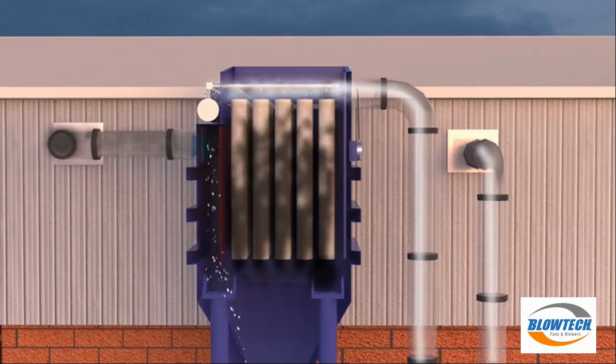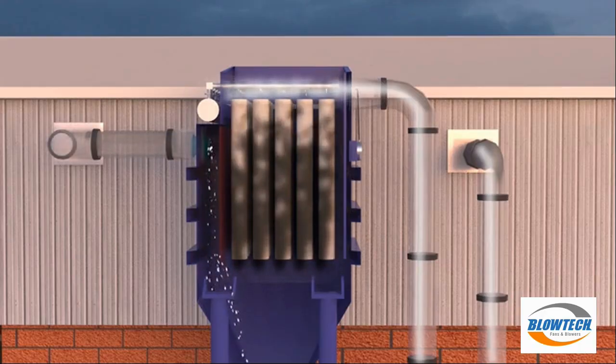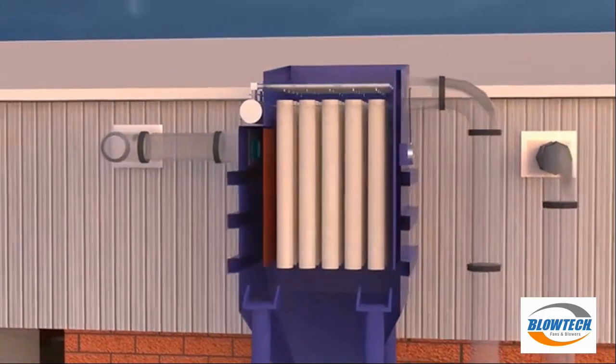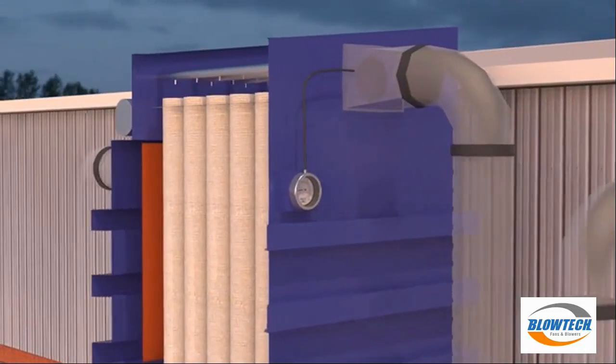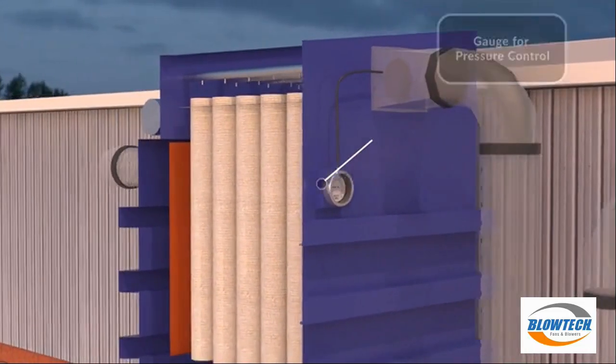This is the general process that takes place in the system. When a certain level of deposit is reached on the filter bags, a pressure is created. This is detected by a gauge fitted on the machine, and this starts the process of cleaning the filter bags.